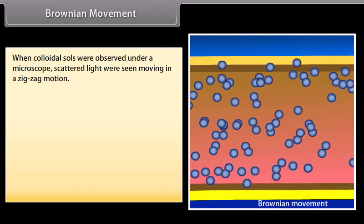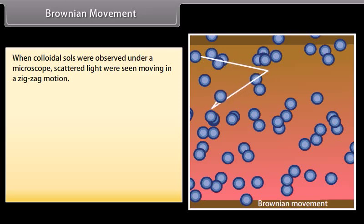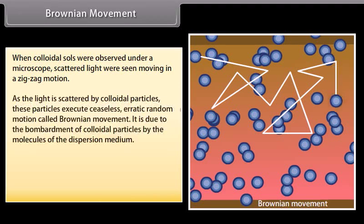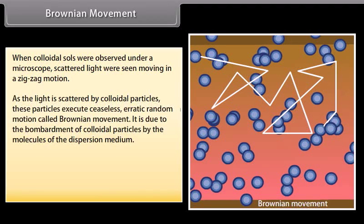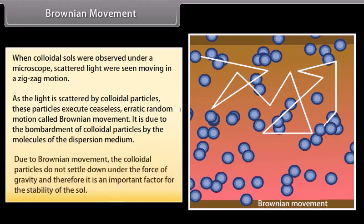When colloidal sols are observed under a microscope, the scattered light particles are seen moving in a zigzag motion. As light is scattered by colloidal particles, they execute ceaseless erratic random motion called Brownian movement, caused by bombardment of colloidal particles by molecules of the dispersion medium. Due to Brownian movement, colloidal particles do not settle under gravity, making it an important factor for the stability of the sol.